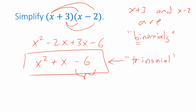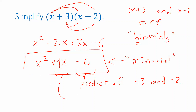Where did this minus 6 come from? We got that minus 6 when we multiplied the plus 3 and the minus 2 — so minus 6 was the product of plus 3 and minus 2. How about the coefficient in front of the x? We know there's a hidden 1 there. That 1 came from combining like terms with coefficients of plus 3 and minus 2. When we combine like terms, we add the coefficients, so plus 1 is the sum of plus 3 and minus 2. The middle coefficient is the sum of these numbers and the end coefficient is their product.